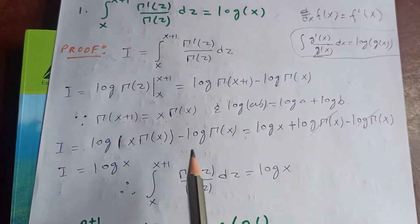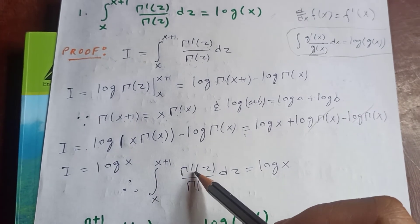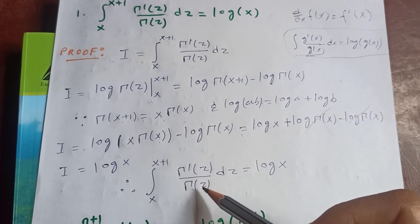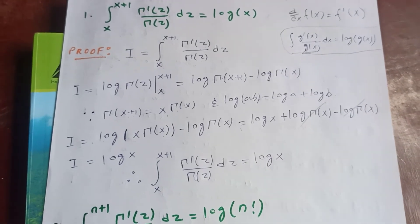You will get log x. Therefore our integral from x to x plus 1 of gamma prime of z upon gamma z dz is log x. Now number 2.